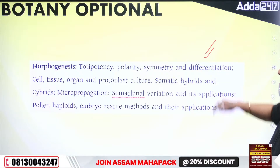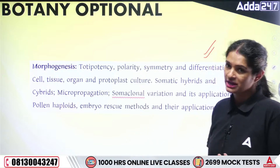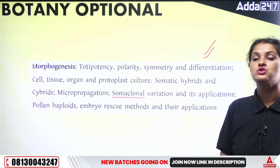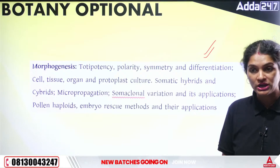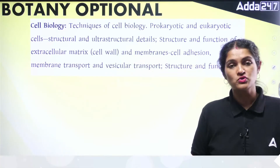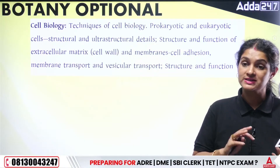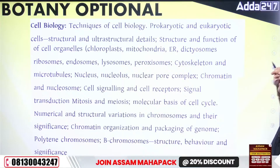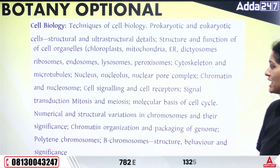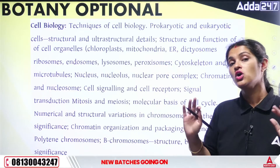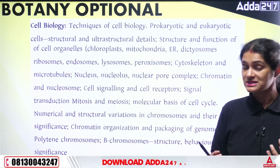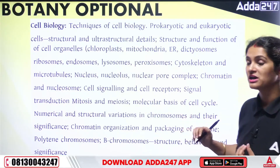Morphogenesis and cell biology: topics include totipotency, polarity, symmetry, differentiation, cell/tissue/organ culture, protoplast culture, somatic hybrids, cybrids, micropropagation, and somaclonal variation. For cell biology: prokaryotic and eukaryotic cell structure differences, extracellular matrix, cell wall, and cell organelles — chloroplast, mitochondria, dictyosome, ribosome, endosome, lysosome, peroxisome, cytoskeleton, microtubules. Cell signaling and cell receptors are also covered.